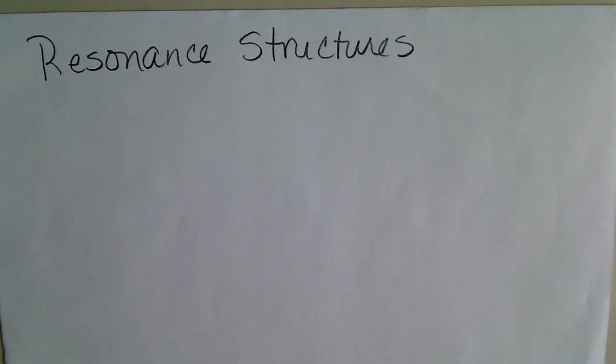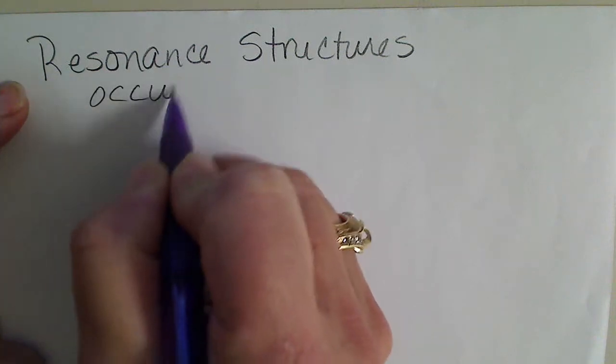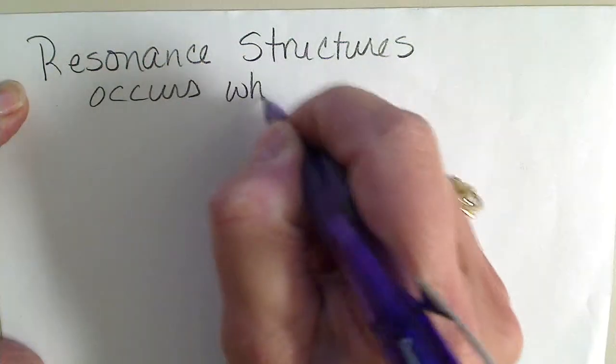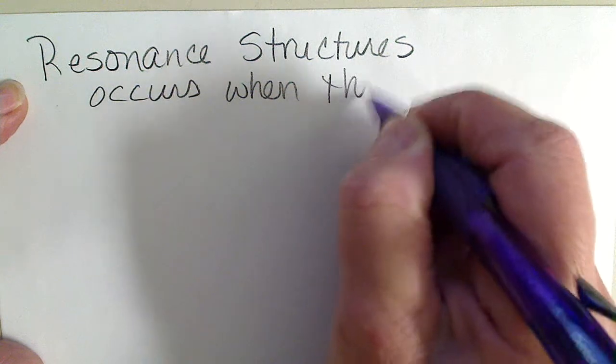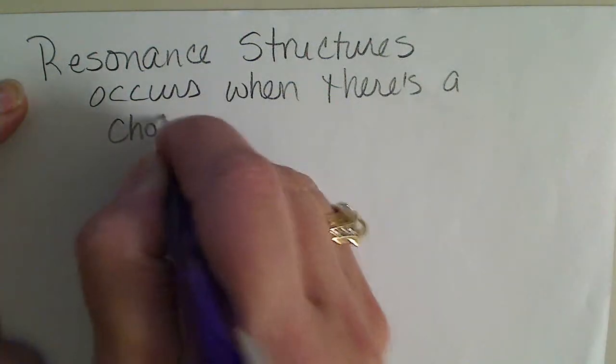In this video we are going to look at dot structure representations for molecules. Whenever we have a choice on where to put the double bond, we end up with what's called resonance structures. That occurs when there's a choice on where to put the double bond.